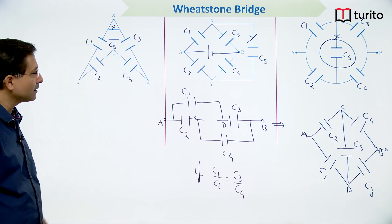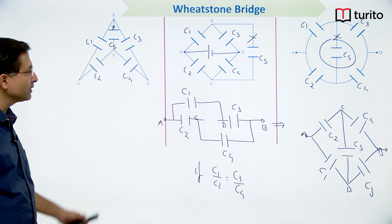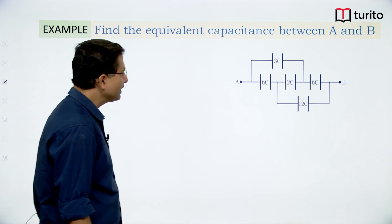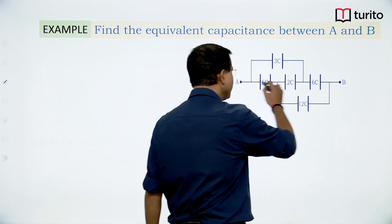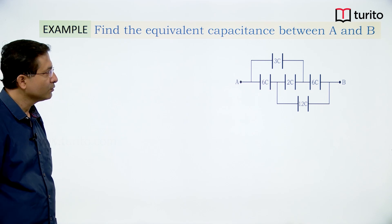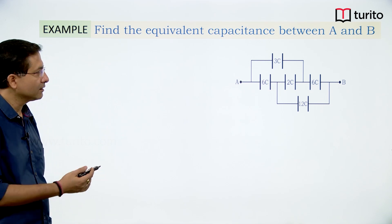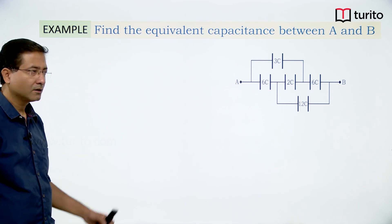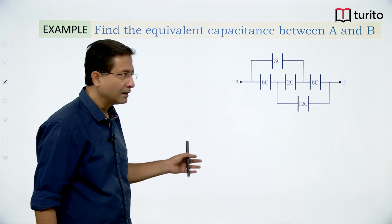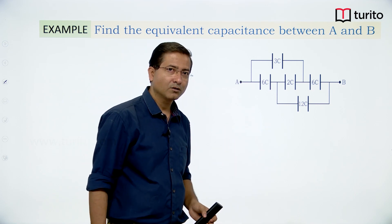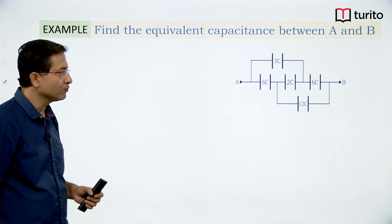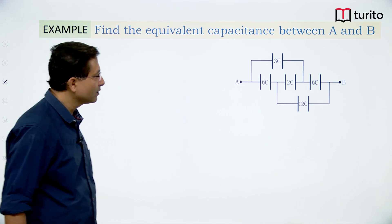Find the equivalent capacitance between A and B. You can try redrawing the diagram to check whether it is in the Wheatstone bridge form and identify which capacitor has no role. Which capacitor should be removed?